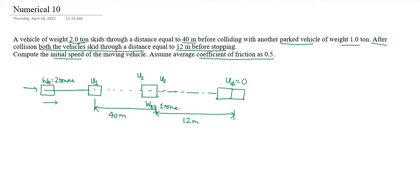The question asks for the initial speed of the moving vehicle, which is B1 squared. We work backwards: we have B4, and using that distance and the relevant principle, we get B3. From B3 we apply another principle to get B2, and from B2 we apply another principle to get B1.